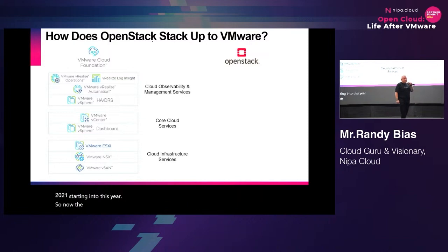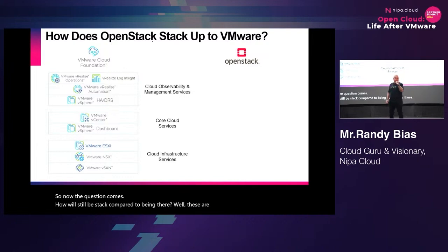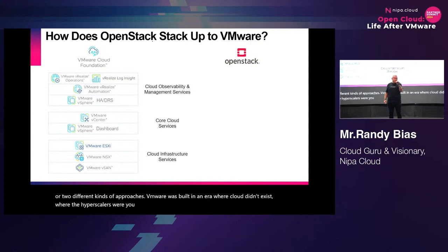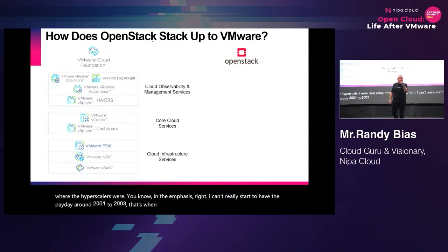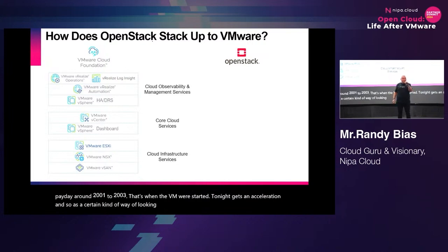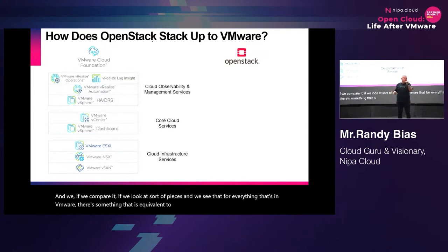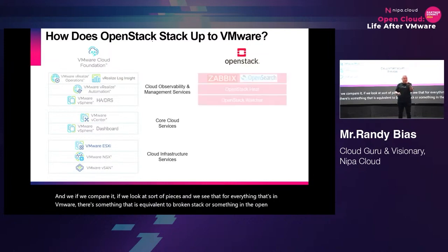Now the question becomes: how does OpenStack compare to VMware? These are two different kinds of systems, two different approaches. VMware was built in an era where cloud didn't exist — where the hyperscalers were in their infancy, really having its heyday around 2001 to 2003. If we compare the pieces, you'll see that for everything in VMware, there's something equivalent in OpenStack or the open source ecosystem.